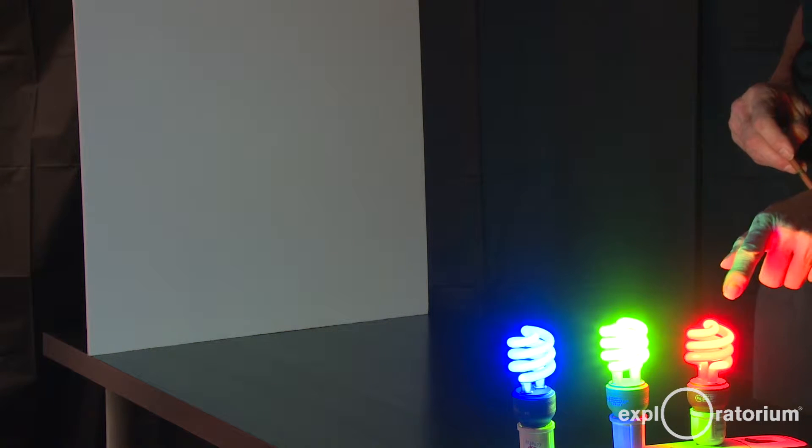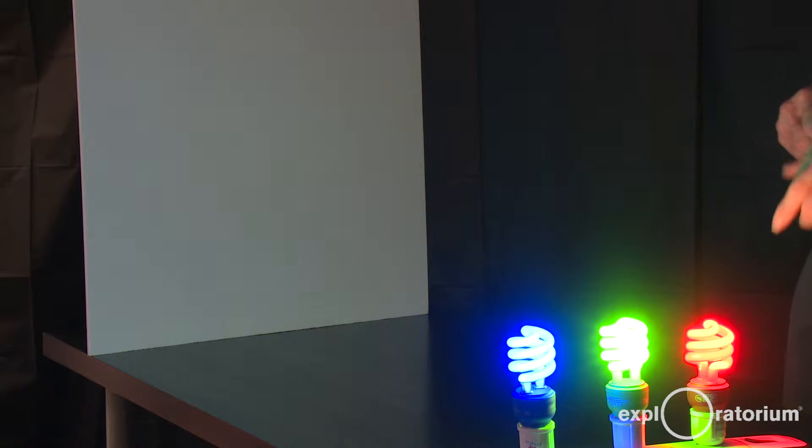When we have the red, the green, and the blue light separated in different positions and shining on the board, they scatter off the board. Red plus green plus blue looks white.